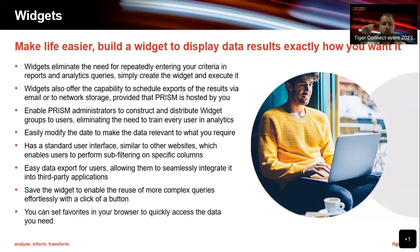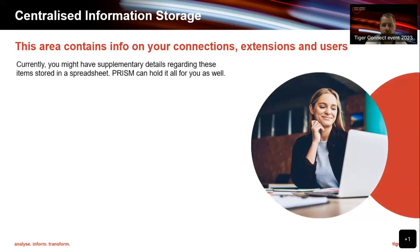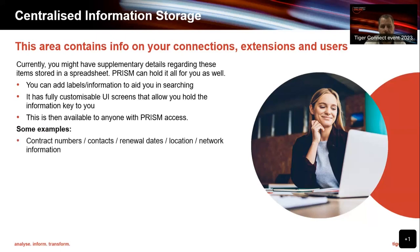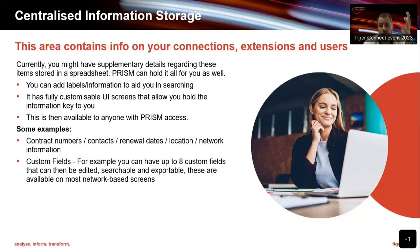Moving on to centralised information storage — this is an area I'd be surprised if most customers have actually heard of. We offer this area within Prism where you can store a lot of extra information, and I'll do a little demo on some of the things you can store. You can have labels of information to aid in your searching. The screens are customisable, so you can choose what information you hold. It's available to anyone with Prism access. You can store contract numbers, contracts, renewal dates, location, network information — Ben mentioned storing IP addresses earlier — and it will help you when you're doing searching or building reports.